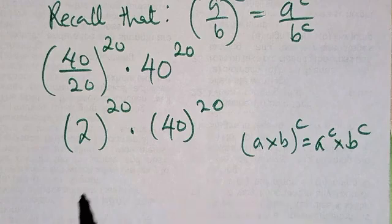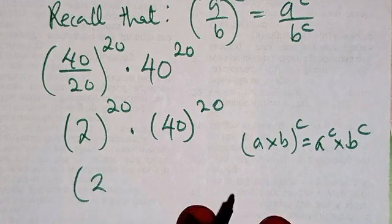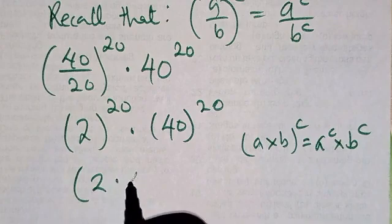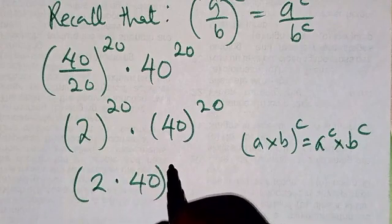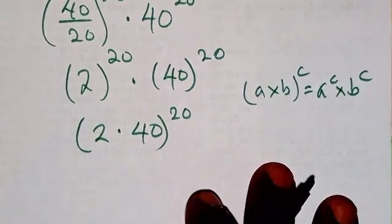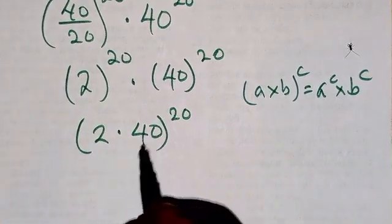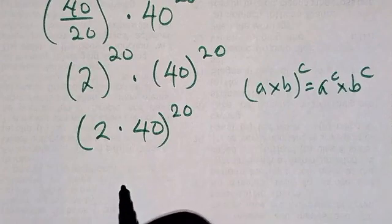So we can bring 20 to multiply by 40, then to power 30. From there we have 2 multiply by 40, that will give us 80 then to power 20.